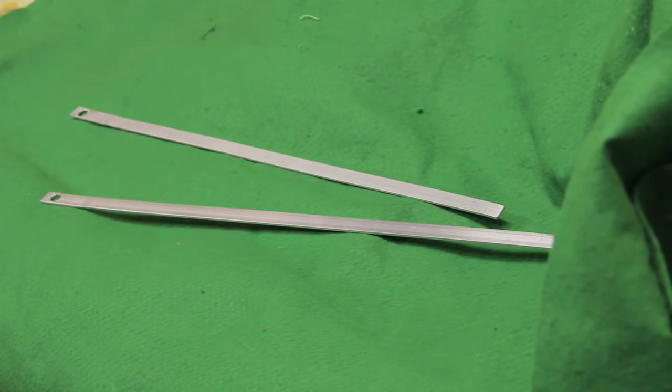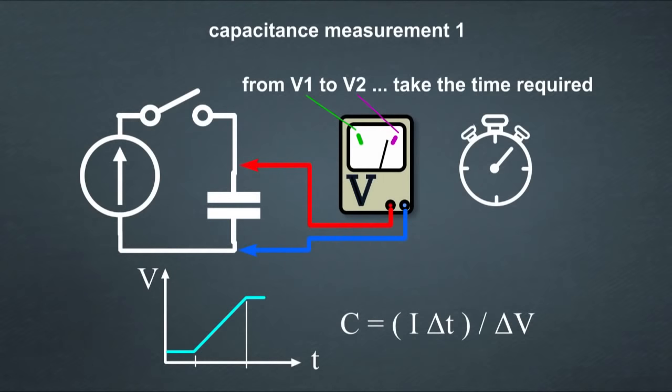Besides the mentioned method to directly measure capacitance through admittance, there are three other methods. One is to look at the time a capacitor takes to be charged from a given voltage to another, providing a constant current source, and the time required is used to calculate the capacitance.